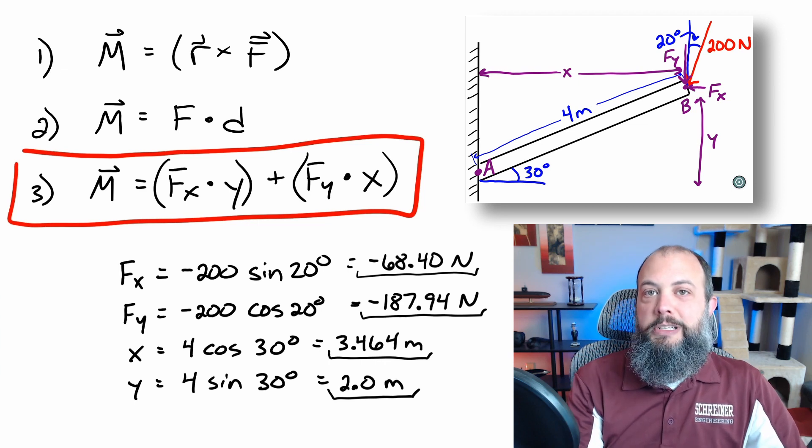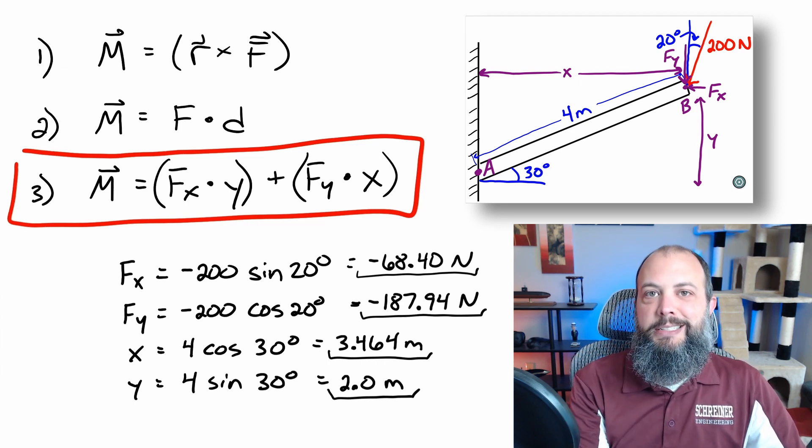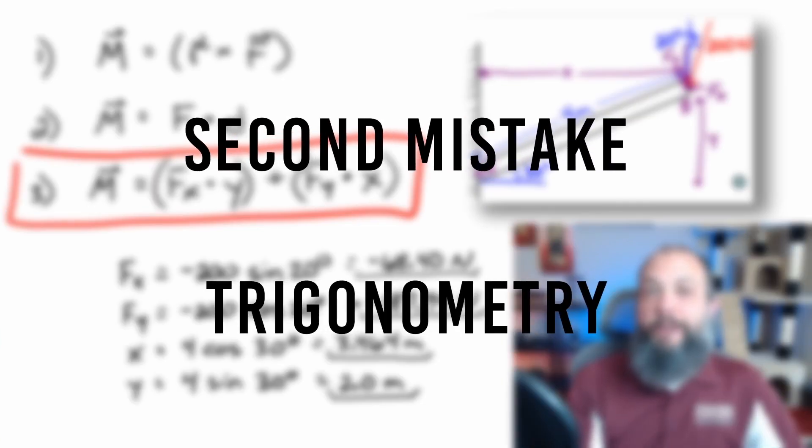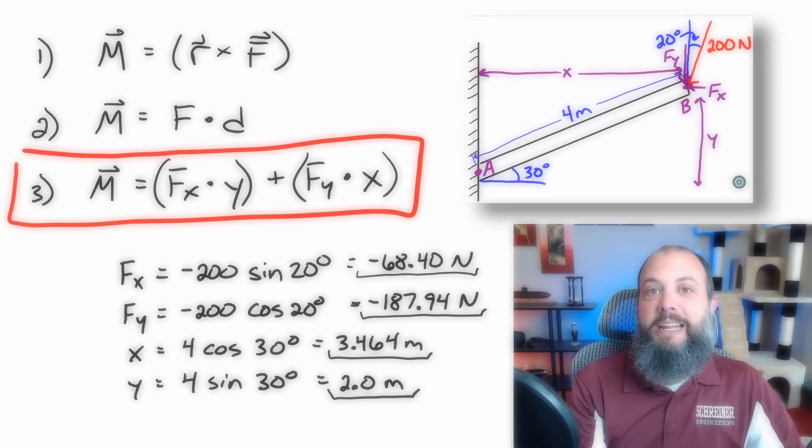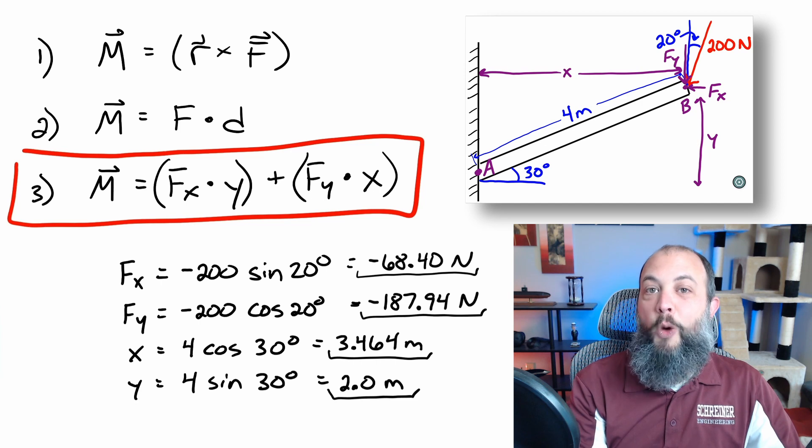So to get over that hurdle, you need to find your X and Y components, X and Y distances. The second major mistake that I would expect students who get a D or F in statics to make is in dealing with that 20 degree angle.